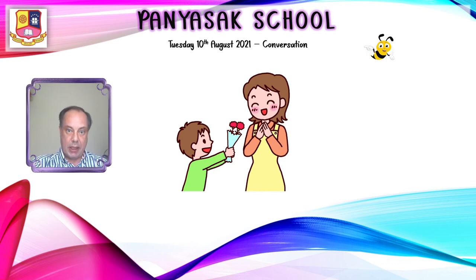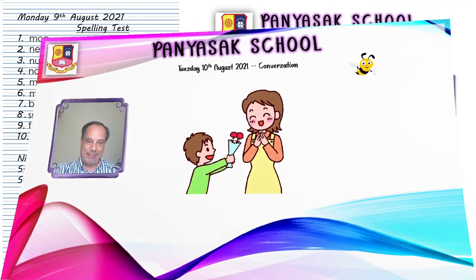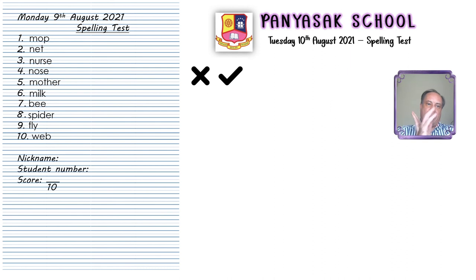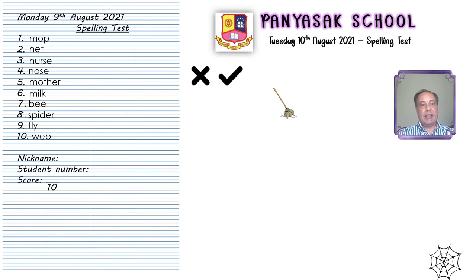Please follow me. So let's check the spelling test. I want you to write check or X. The first word was MOP. MOP is spelled M-O-P. Number two was NET. NET is spelled N-E-T.